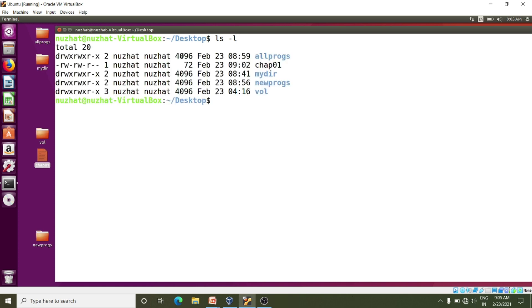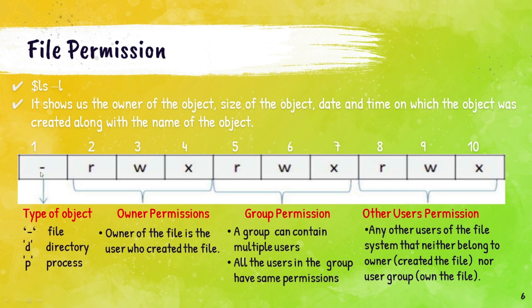Here you can see the owner of the object, the size of the object, the date and time on which the object was created, along with the name of the object. The first column refers to the type of object. An object can be categorized as a regular file with a hyphen, a directory with the d symbol, and a process with the p symbol. The set of three characters in columns 2 to 4 tells the owner of the file — the user who created the file. By default, the user who created a file becomes its owner. The characters in columns 5 to 7 denote the permission given to the group. A group can contain multiple users, and all users belonging to the group will have the same access permissions to the file.